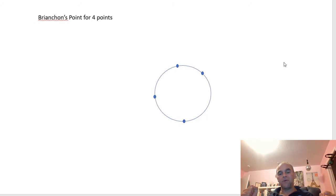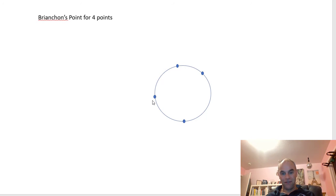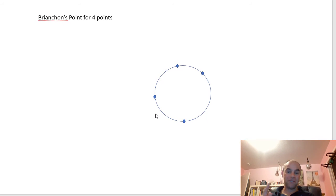What we're going to do is first start by drawing the tangent line at each of these four points. Remember, the tangent is the line that intersects the point and doesn't enter the circle, just touches the point. There's only one line that's true for any point on a circle. So we're going to do that for all four points on the circle.